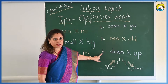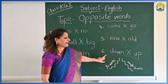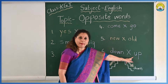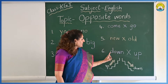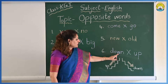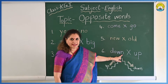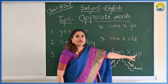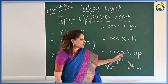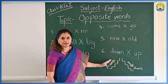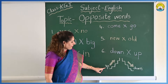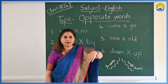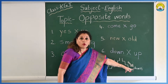Now the next opposite word is down, and the opposite of down is up. D, O, W, N — down. U, P — up. Children, when you climb the stairs, it is up. And when you come down from the stairs, it is down.